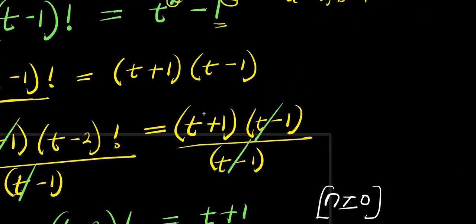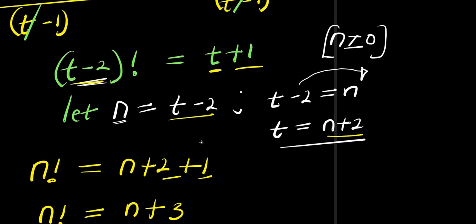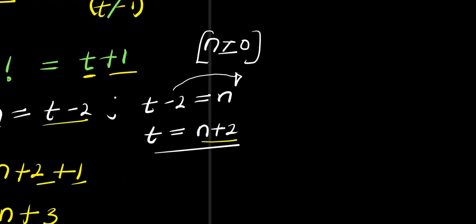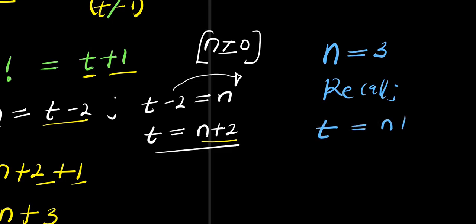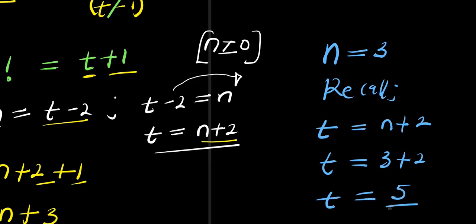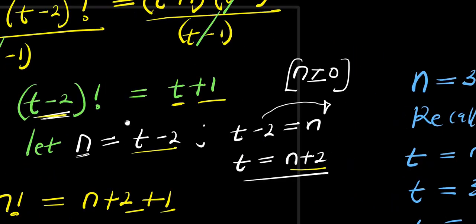So we can now say that n equals 3. But recall that t equals n plus 2, which means t equals 3 plus 2, that is 5. So the value of t is 5.